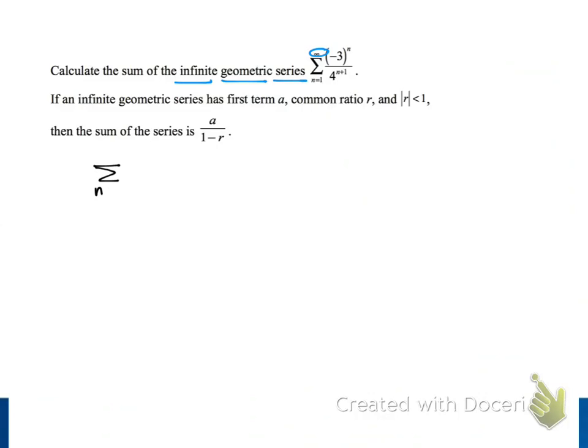Let's start by writing out the first few terms of our series. When n is equal to 1, the numerator of our first term is negative 3 to the first power and the denominator is 4 squared. When n is equal to 2, the numerator is negative 3 squared and the denominator is 4 cubed. Our following terms that we're adding are negative 3 cubed divided by 4 to the fourth, and negative 3 to the fourth divided by 4 to the fifth. And this pattern is going to continue on.